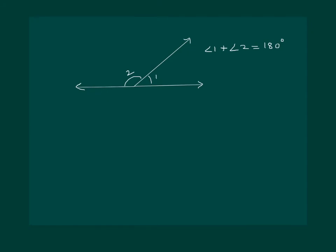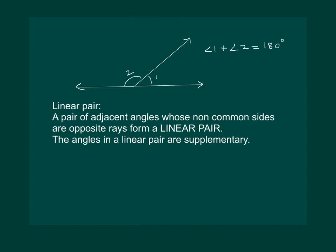Hence we are now in a position to define a linear pair. A pair of adjacent angles whose non-common sides are opposite rays form a linear pair. The angles in a linear pair are supplementary.